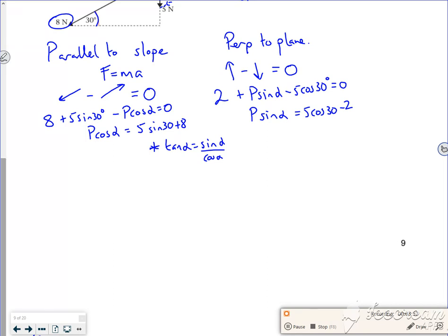So if I do this equation, the P sin alpha divided by the P cos alpha, the P's will cancel when I've got what tan alpha is. So that would be 5 cos 30 minus 2 over 5 sin 30 plus 8. Now if I work it out, alpha comes out as roughly 12.5 degrees according to the completed pack.